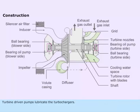Turbine driven pumps lubricate the turbocharger. There are two pumps - one on the blower side and another on the turbine side. The pumps direct oil to the bearings.